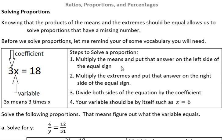So the steps are we multiply the means and put that answer on the left side of the equal sign. We multiply the extremes and put that answer on the right side of the equal sign. And then we divide both sides of the equation by the coefficient.